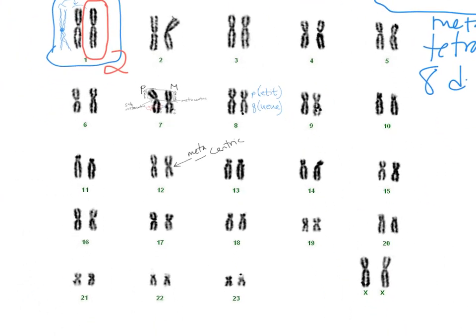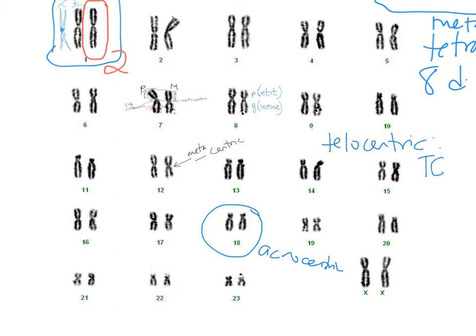And then we have two other types of chromosomes: acrocentrics and telocentrics. Acrocentrics may be like chromosome 18, for example, where there's just a tiny little nub of short arm — barely some DNA you can see above the centromere. Telocentrics basically have no short arm at all. The order along the chromosome is: telomere, centromere, coding DNA — the genes that make up the chromosome — and then another telomere. So when the telomere and the centromere are right next to each other, those are telocentric.